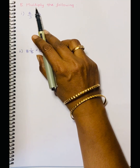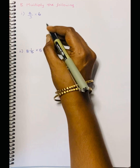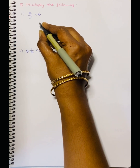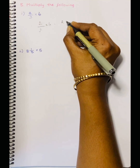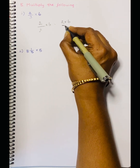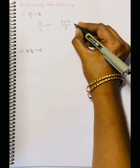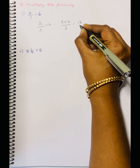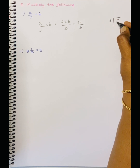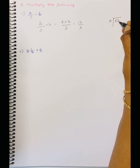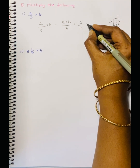Fifth question: Multiply the following. See the first sum: 2 by 3 into 6. Multiply straight away. 2 by 3 into 6 is equal to 2 into 6 divided by 3, which is 12 divided by 3. 12 divided by 3 is 4. The answer is 4.